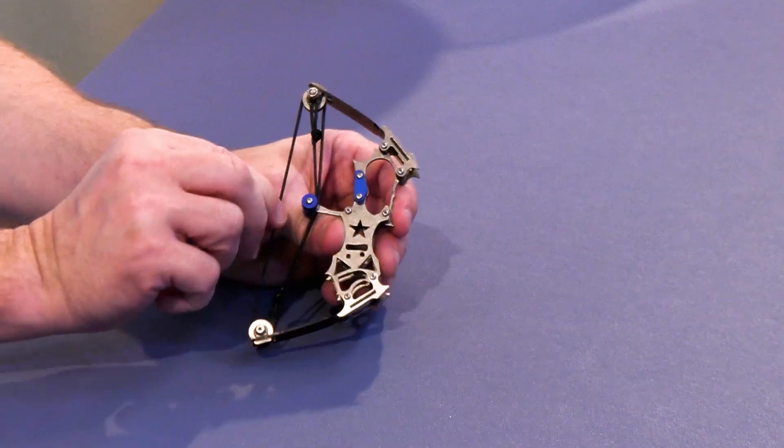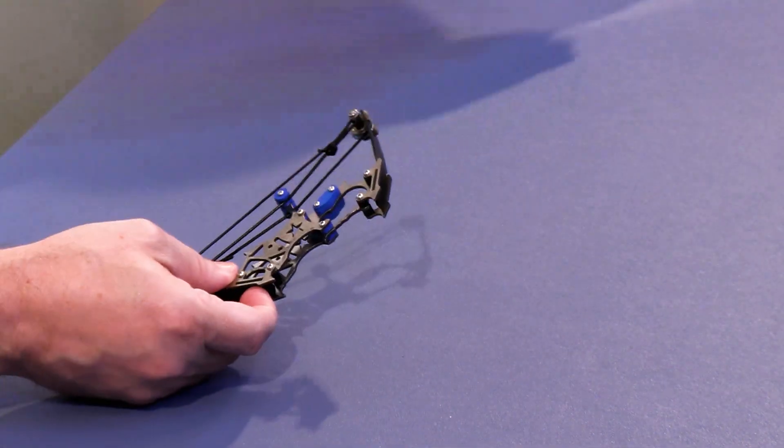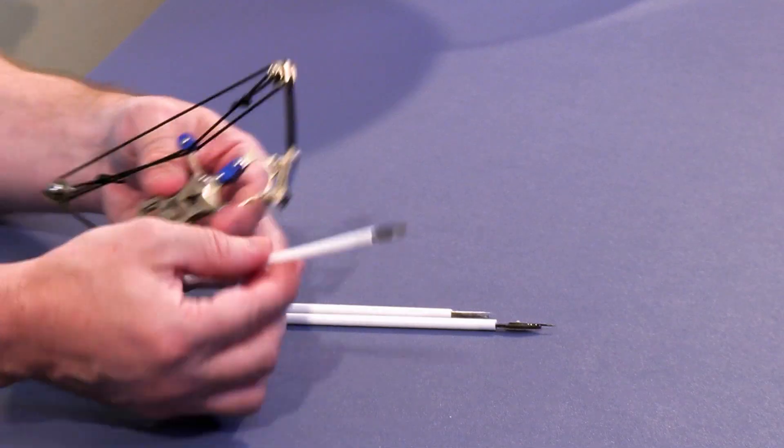So here is this tiny, tiny little bow and arrow that I bought. It fits in the palm of your hand. It's actually made of metal. It's really durable. It comes with these little arrows, which are kind of a plastic with a metal tip here at the end.